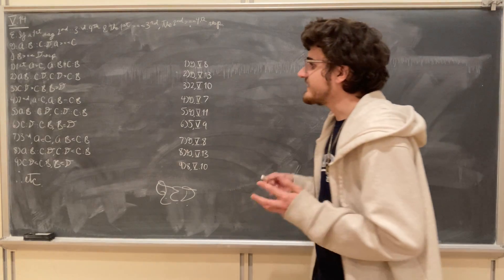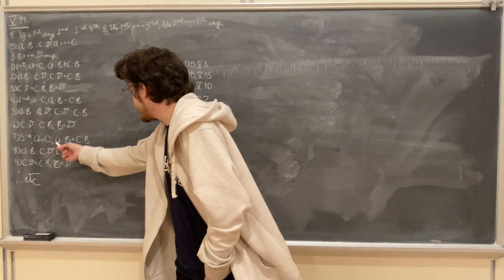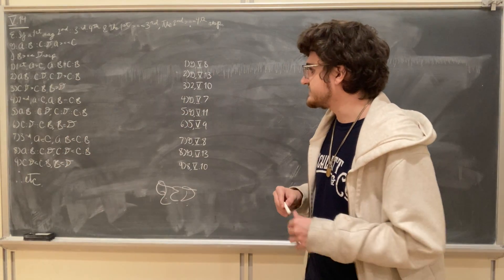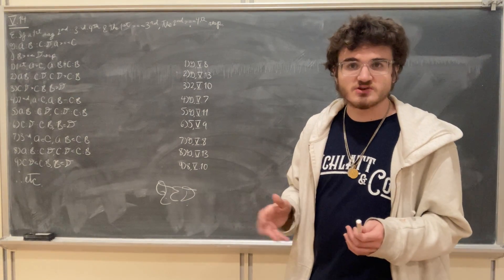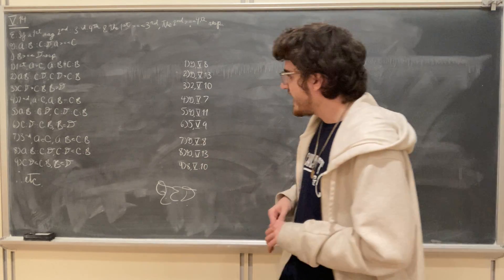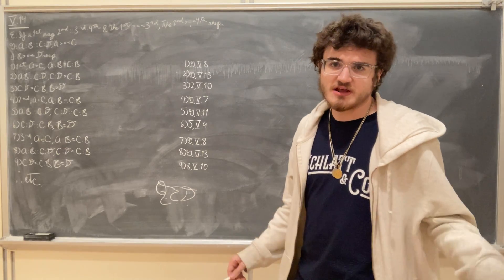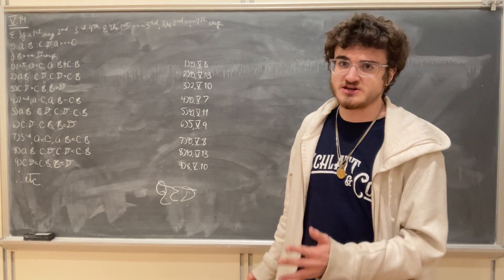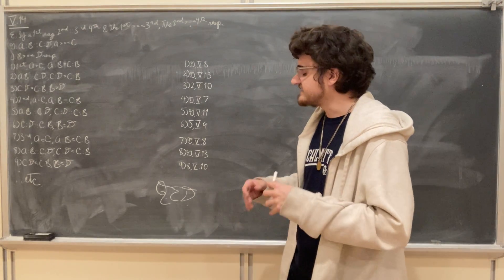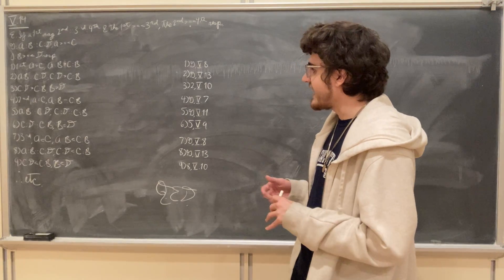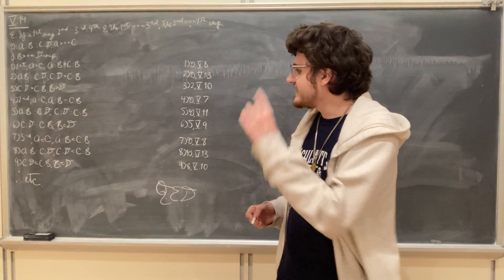Finally, let a be less than c. Now, a being less than c, we know that the ratio a to b is going to be less than the ratio c to b, again by Proposition 5.8 — because among unequal magnitudes, the greater is going to have to the same the greater ratio. So c is going to have a greater ratio than a has, or in other words, a is going to have a lesser ratio than c has. But we were given that a is to b as c is to d, which means that by Proposition 5.13, we can say that c has to d a lesser ratio than c has to b.